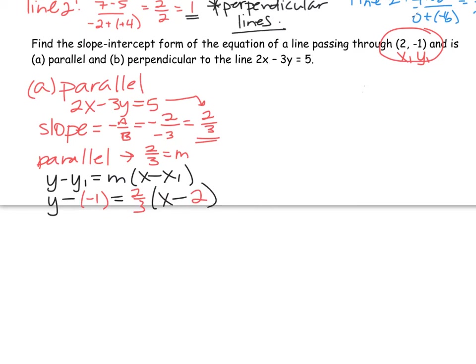From here, we simplify. Remember, if you have a double negative, change that to positive. On the right-hand side, eliminate the parentheses simply by distributing the 2 thirds in. This gives us y plus 1 equals 2 thirds times x is 2 thirds x minus 2 thirds times 2, multiply the top, multiply the bottoms, would be minus 4 thirds.